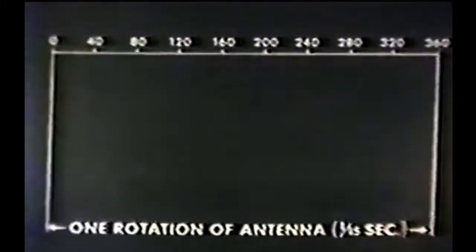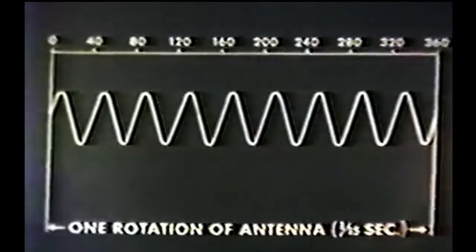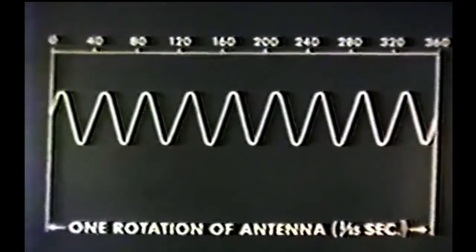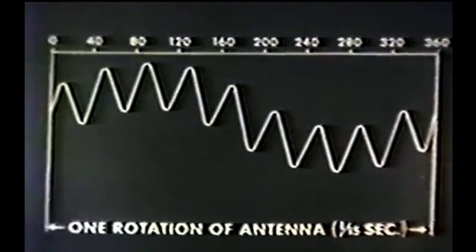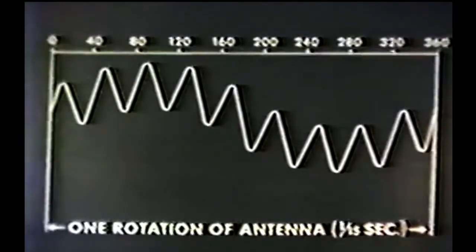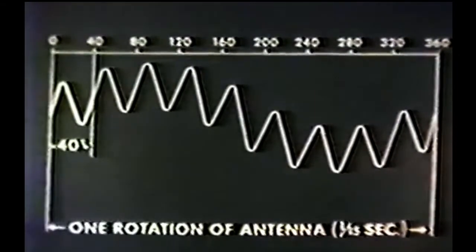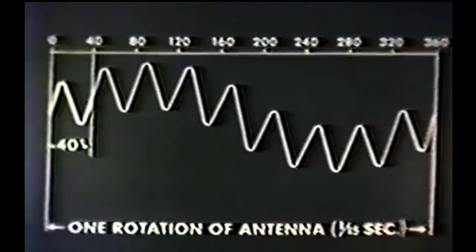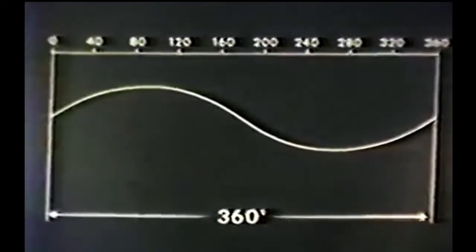In order to provide increased accuracy, the URN-3 beacon develops a 135 cycle amplitude modulation in addition to the 15 cycle modulation. Thus, during one rotation of the antenna, one-fifteenth of a second, we get nine cycles of the 135 cycle modulation along with the one cycle of the 15 cycle modulation. With this 135 cycle modulation, we get a complete cycle of amplitude every 40 degrees of scale, whereas we get a complete cycle of amplitude every 360 degrees of scale with the 15 cycle modulation.